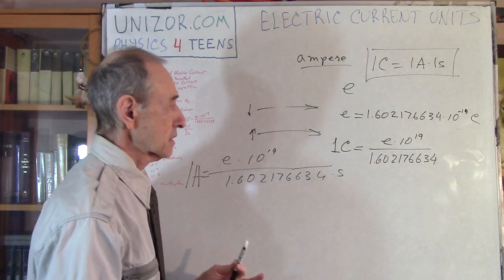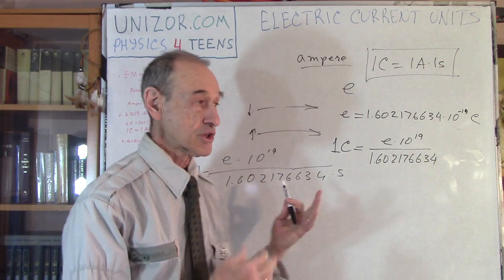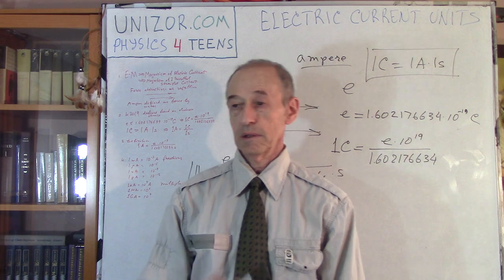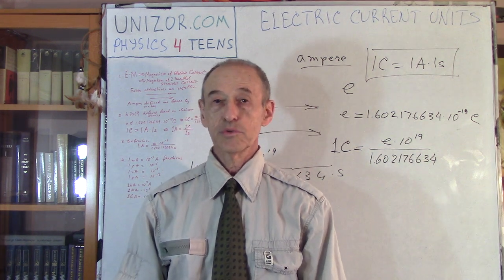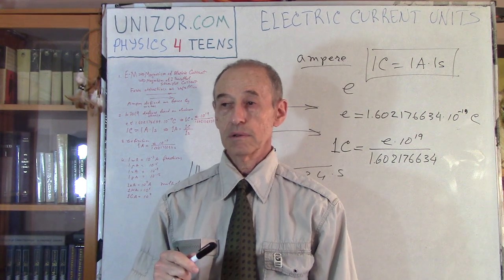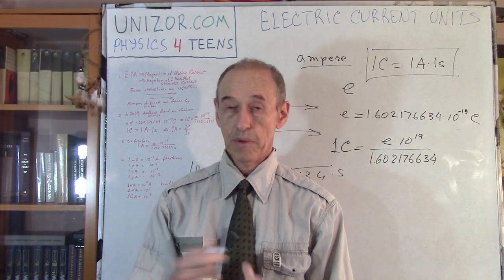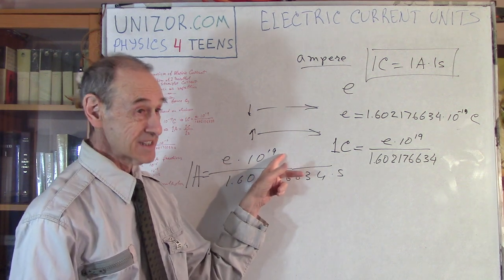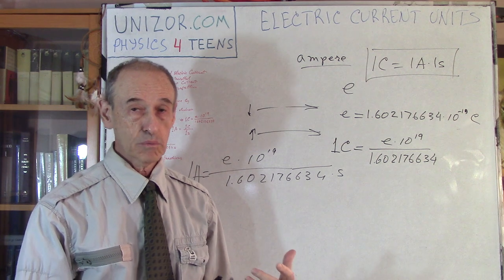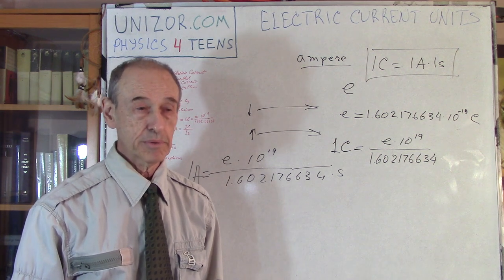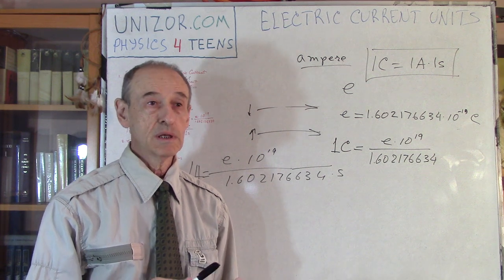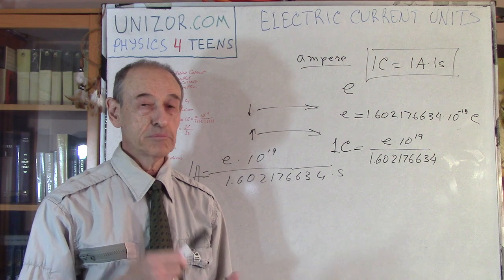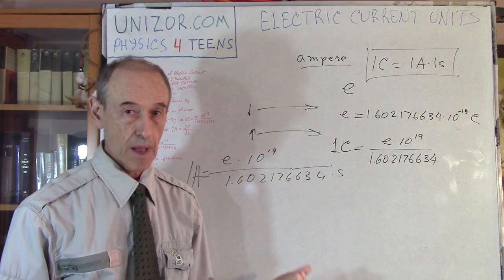Obviously, as in many other cases, we have fractions of ampere and multiples of ampere. Fractions are milliampere, which is one thousand of ampere per second amount of electricity, this amount of electricity per second. So if it's not 10 to 19, if it's 10 to 16, that would be one thousand times less, that would be milliampere. Microampere is one millionth, nanoampere is one billion, and picoampere is one trillionth of ampere.